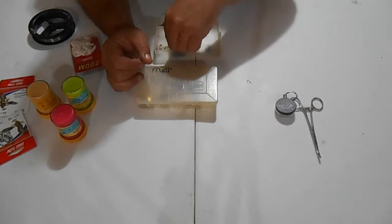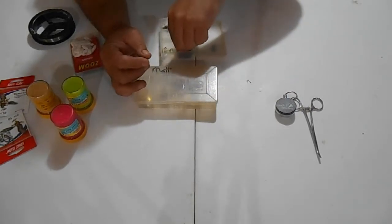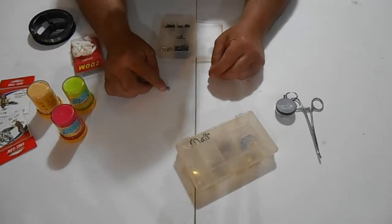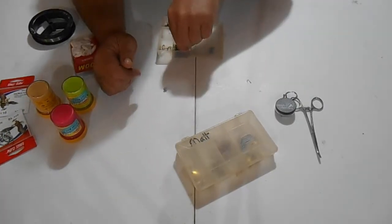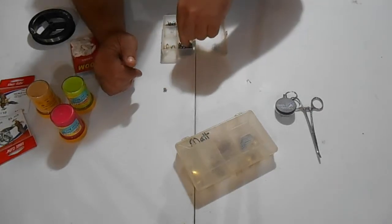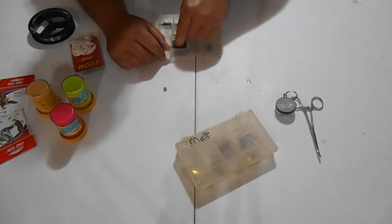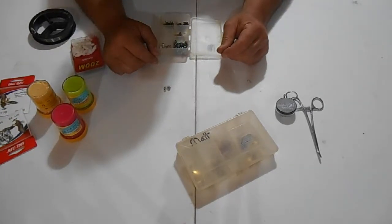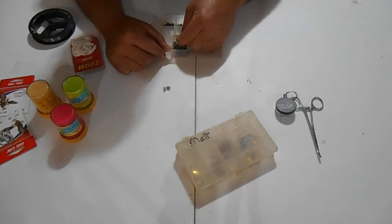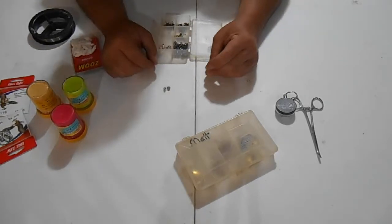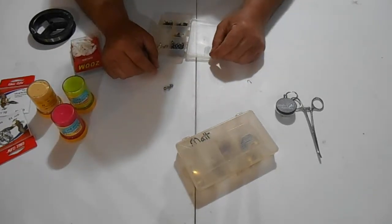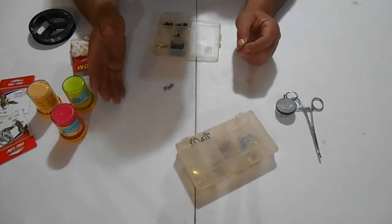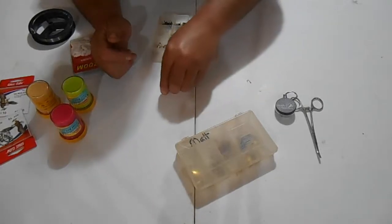The next thing we have is our split shot sinkers. That is a BB split shot sinker. I use one of those most of the time. If the water's up and it's running really fast I may add an additional one. I have seen high muddy water and it rained a lot before opening day where I had to use three.